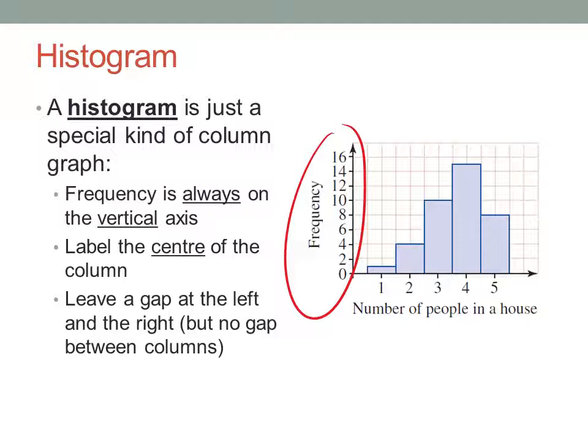A histogram always has the frequency on the vertical axis. The centre of each column is labelled with the relevant data value.